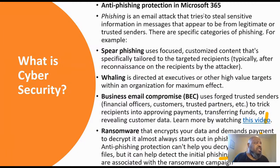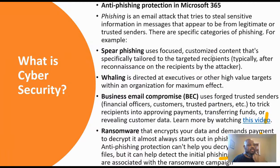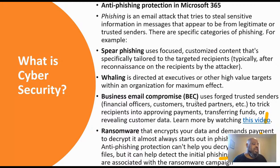If you go to Microsoft Office 365, that's what everybody uses for email — they have a lot of anti-phishing protection in there. Phishing is an email tactic that tries to steal information and appears to be from a legitimate and trusted source. Spear phishing focuses on customized content. Whaling is directed at an executive or high-level value target within the organization. Business email compromise is used to spoof trusted senders such as financial officers or customers, tricking recipients into approving payment, transferring funds, or revealing customer data. And ransomware encrypts your data once you click on that phish.